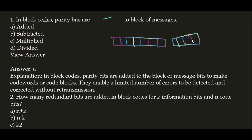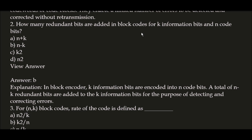They enable a limited number of errors to be detected and corrected without retransmission. Next question: how many redundant bits are added in block codes for k information bits and n encode bits? The correct answer is n minus k. In a block encoder, k information bits are encoded into n code bits, so n minus k redundant bits are added.